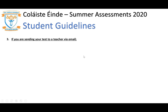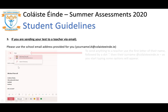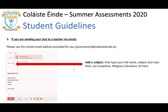If you are sending your test to a teacher via email, please use the school email address provided for you — that is your name with your year of entry at colaistiaenda.ie. To send anything to a teacher, use the first letter of their name followed by a dot, then their surname at colaistiaenda.ie. As you start typing, options will appear and you'll see the teacher's name in the drop-down menu. In the subject tab, type only your full name, subject, and class — for example: Joe Josephson, Religious Education, B3.